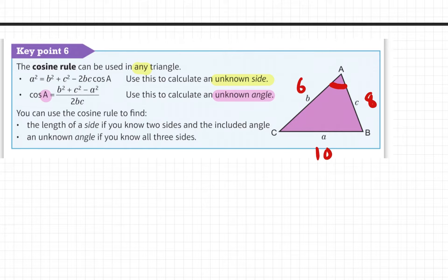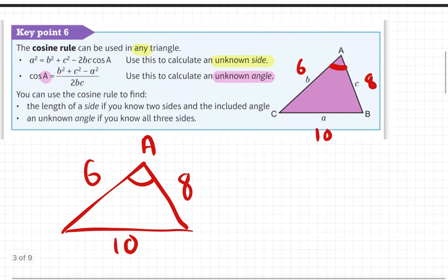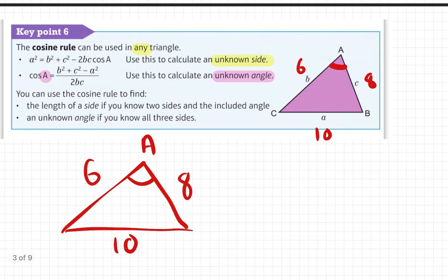You can use the cosine rule to find the length of a side if you know two sides and the included angle, or an unknown angle if you know all three sides. So if I had a triangle where I give you three sides, I can now go and find this angle here.